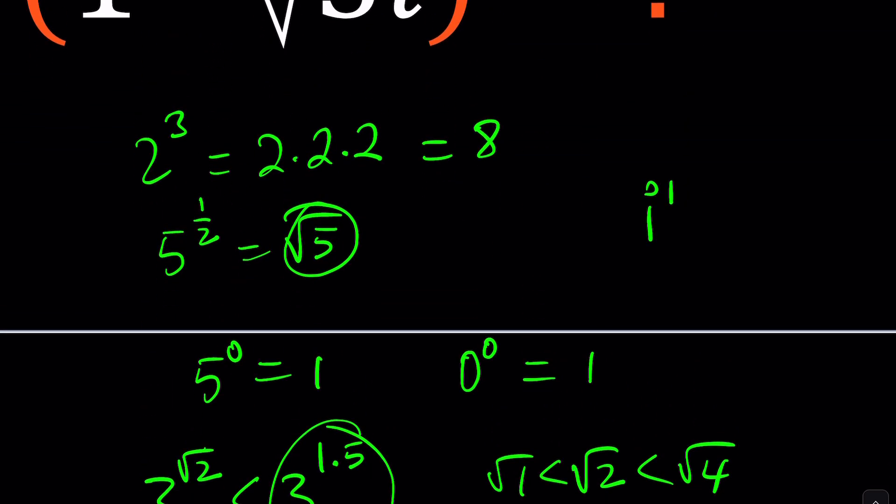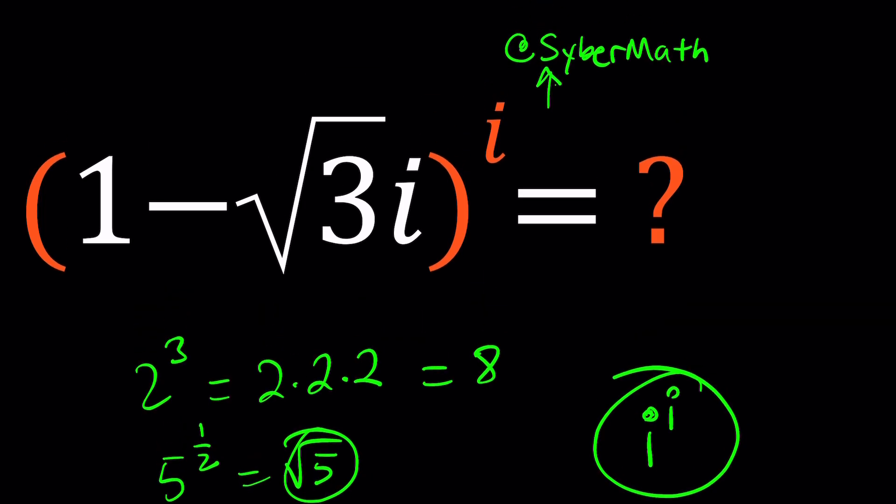But with the case of complex numbers what is i to the power i? By the way I also made a video about this you can check it out. Now let's go back to this we have 1 minus root 3i to the power i. So how do you raise a complex number to an imaginary power? Let's go ahead and find out.